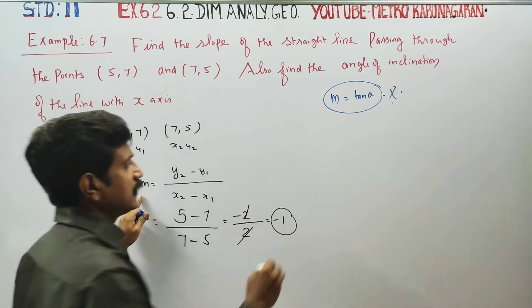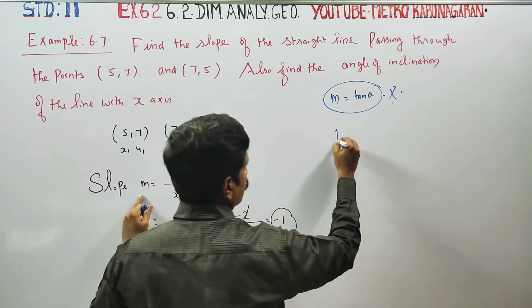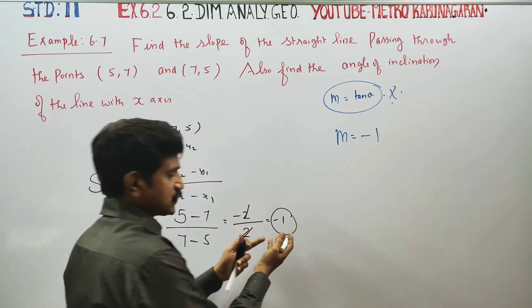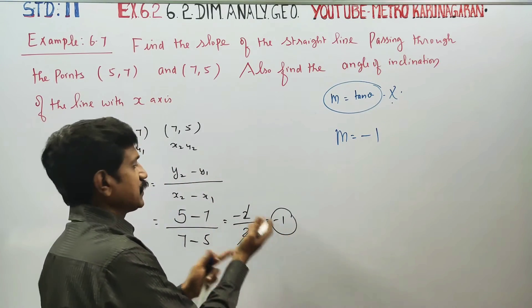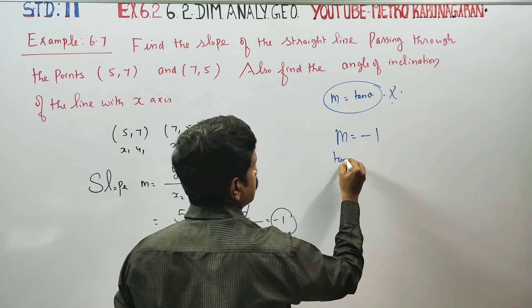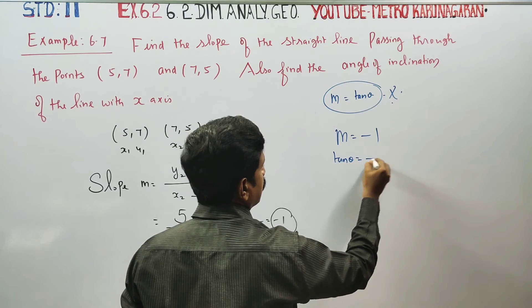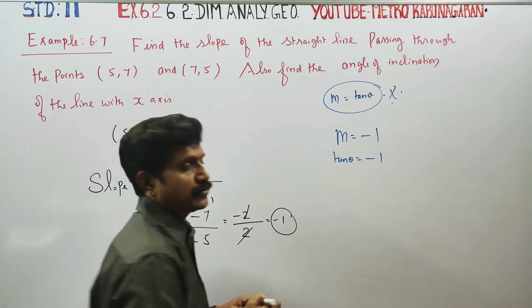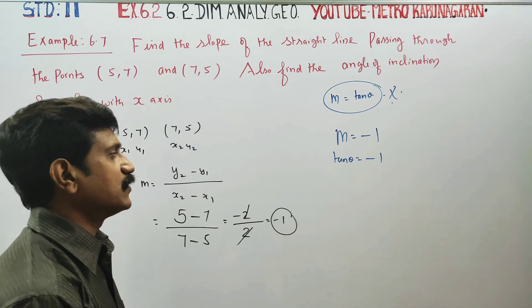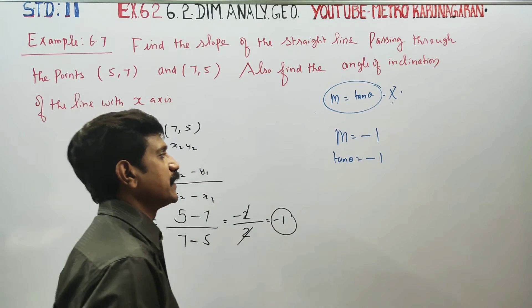We have found m is equal to minus 1. The value of the slope is equal to minus 2 divided by minus 1, giving us minus 1.